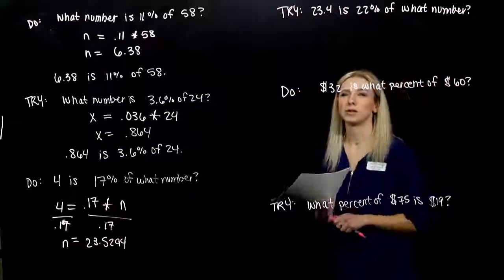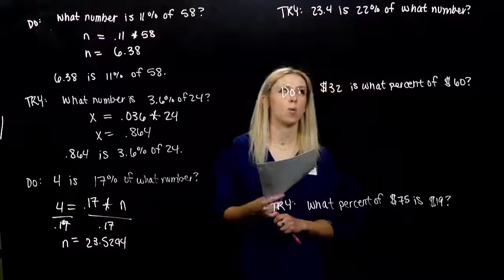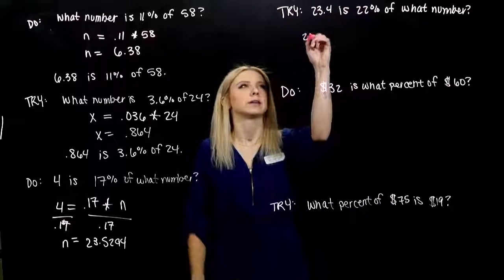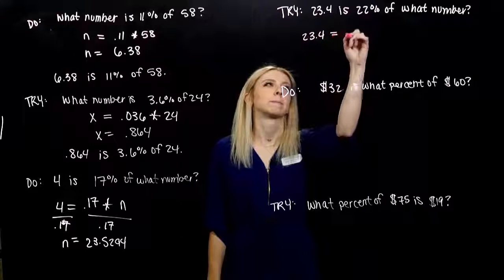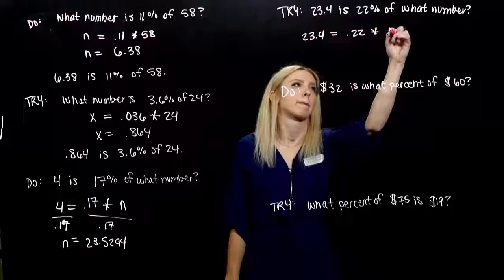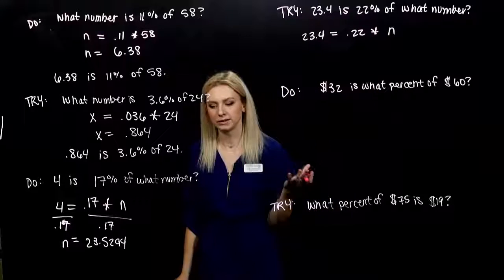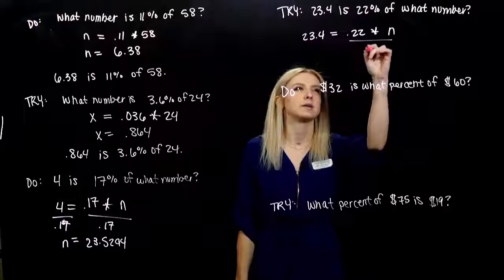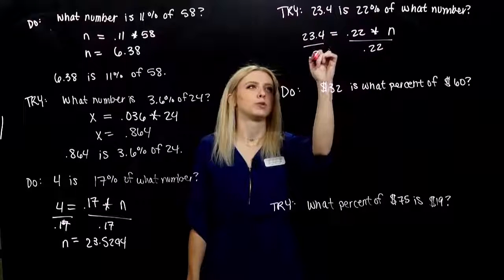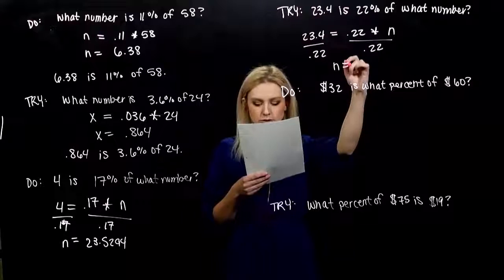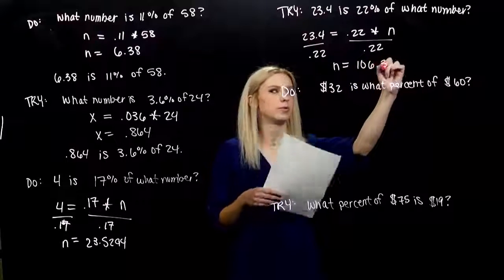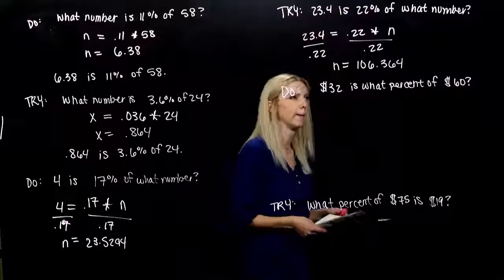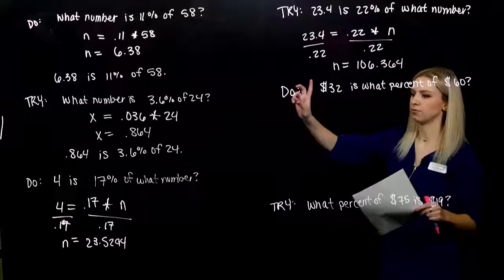Go ahead and take the next one. 23.4 is 22% of what base? Of what number? So, I'll parse it down. Write it as an equation. And, again, what needs to happen? I want N on its own. I need to divide both sides by 0.22. So, N is equivalent to 106.364. Alright. So, we solved for the amount. We solved for the base. Now, we're going to solve for percentages.